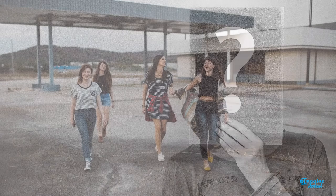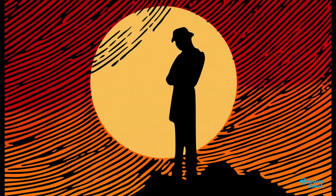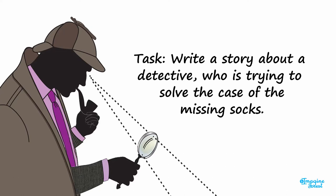Finally, who is the criminal? Could it be a group of school kids playing a prank? Or maybe you could twist the story at the very end and reveal the detective as the ultimate criminal behind this crime. Using the ideas in this video, your task is to write a story about a detective who is trying to solve the case of the missing socks.